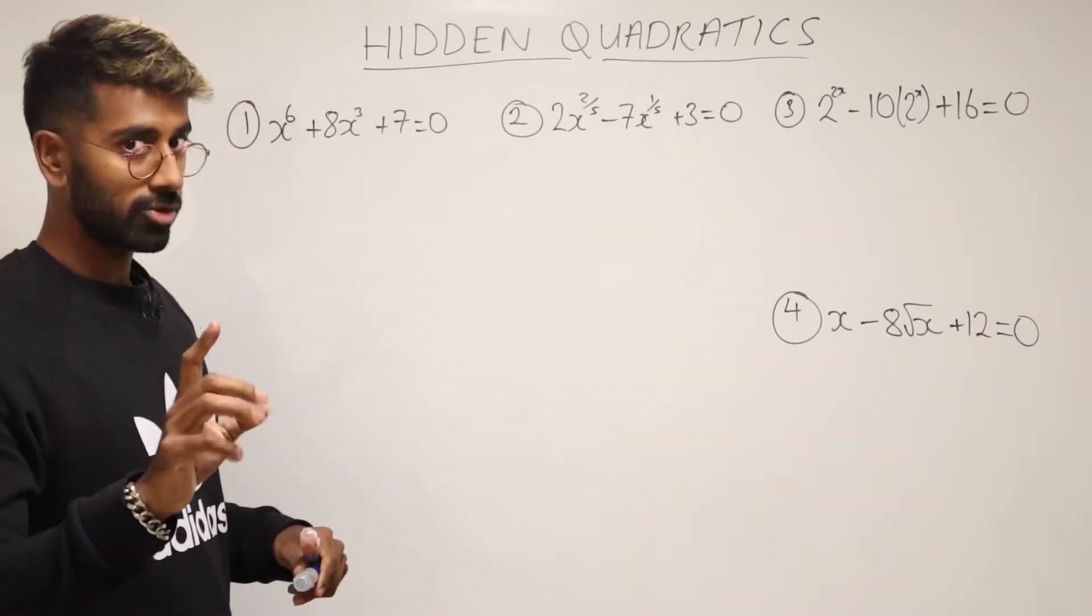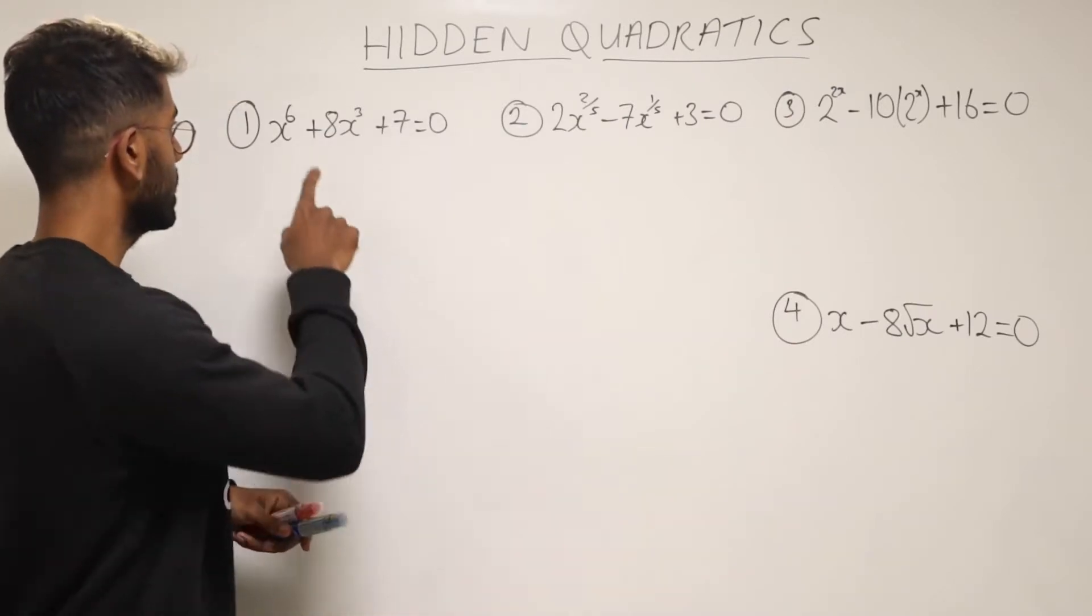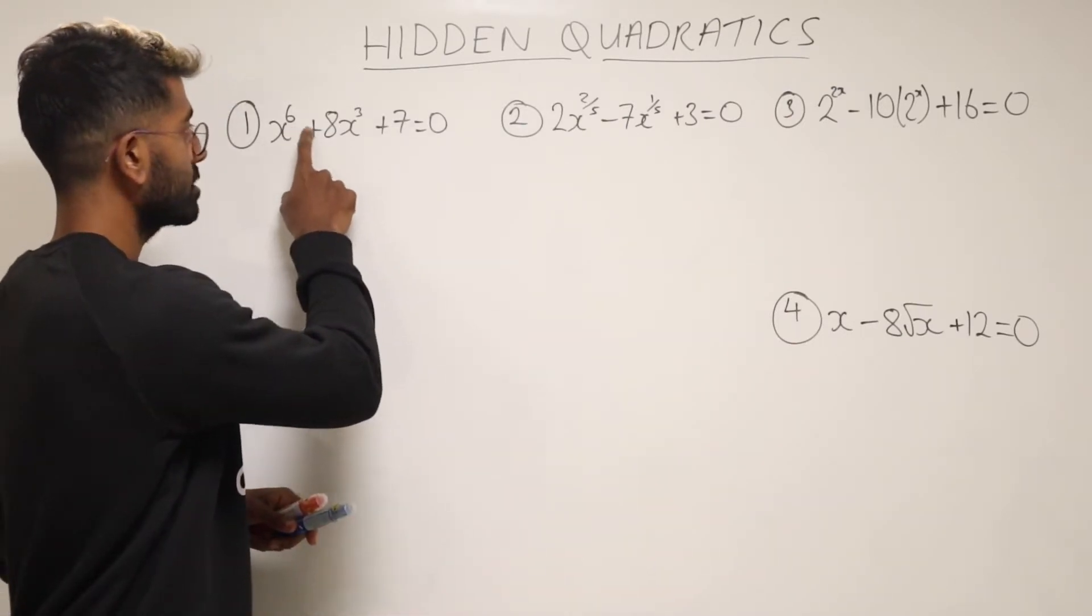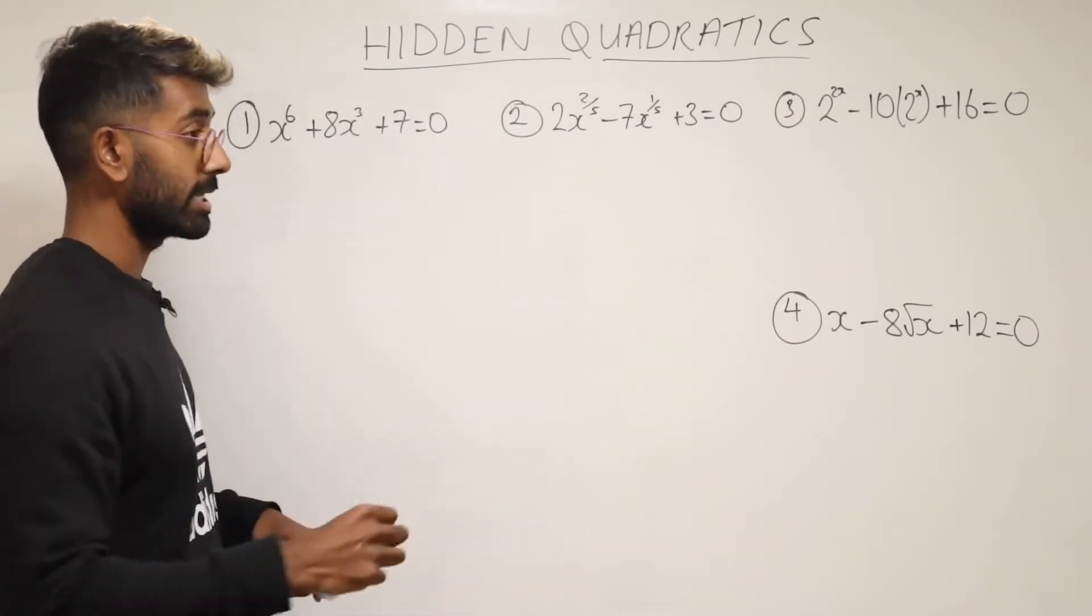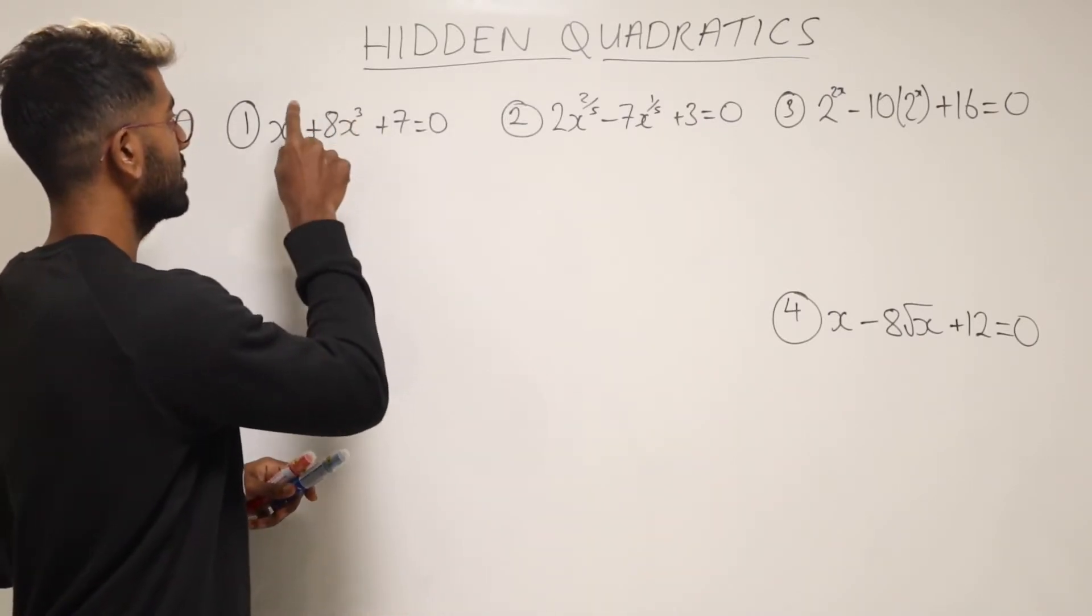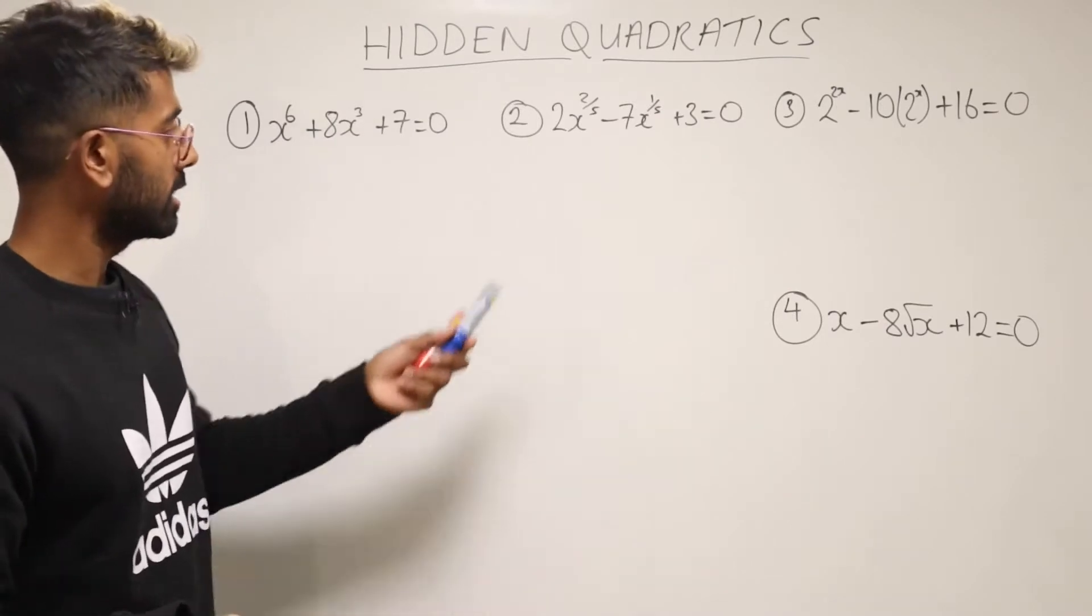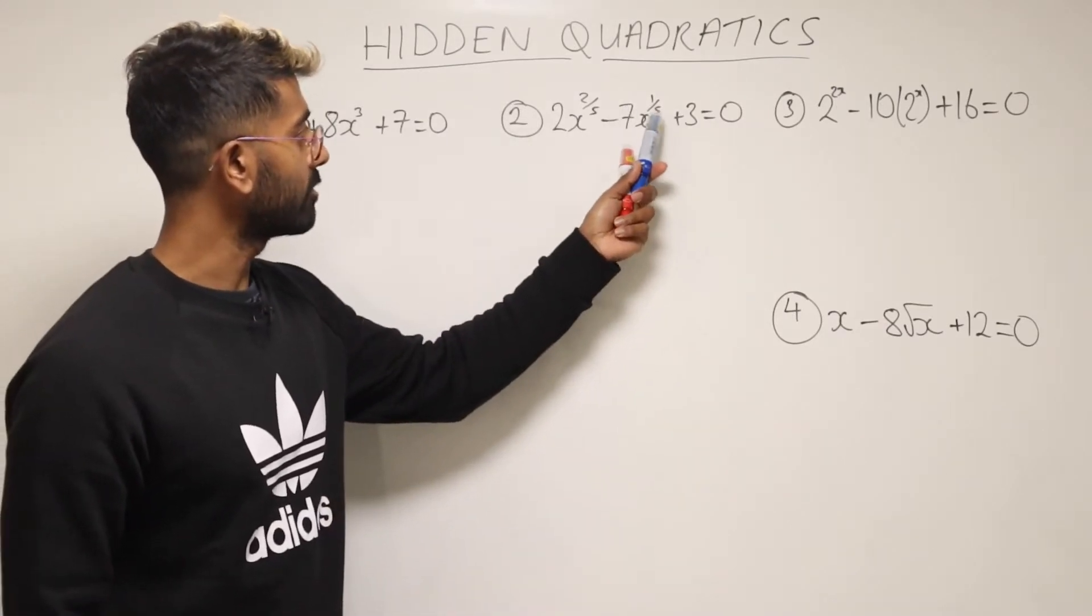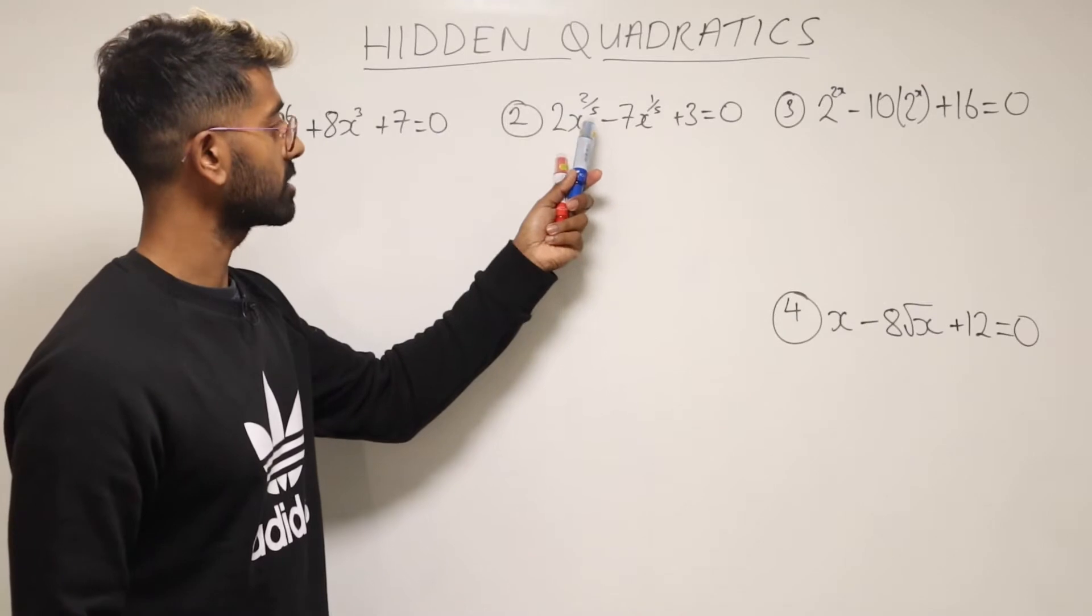So just one thing to pick up on straight away is this. This here is x to the power of 6 and this is x to the power of 3. Notice that 3 is exactly half of 6. Same over here. A fifth, that's exactly half of two-fifths.